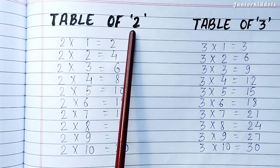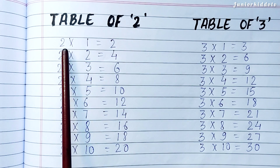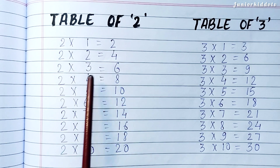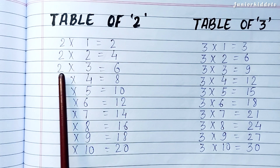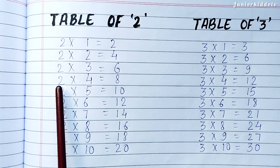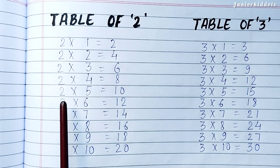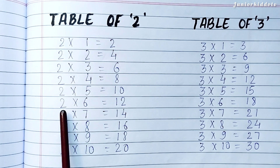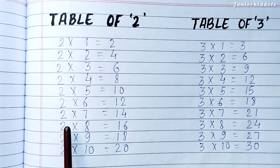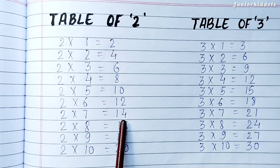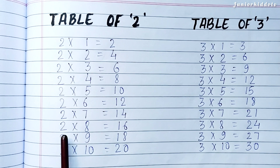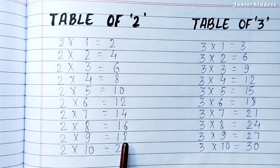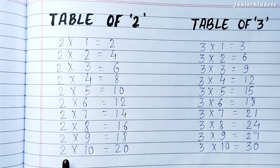Table of Two. Two Ones are Two. Two Twos are Four. Two Threes are Six. Two Fours are Eight. Two Fives are Ten. Two Sixes are Twelve. Two Sevens are Fourteen. Two Eights are Sixteen. Two Nines are Eighteen.